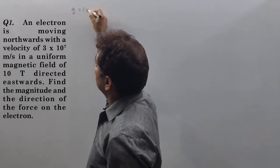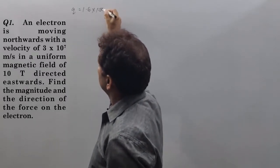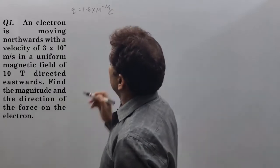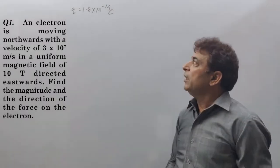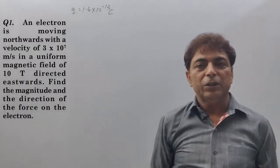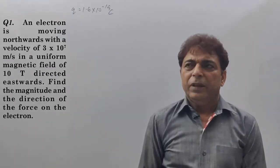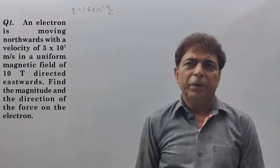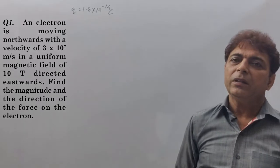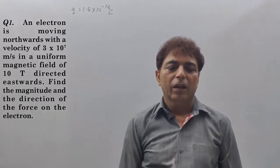Electron charge: 1.6 × 10⁻¹⁹ coulomb. Whether given in the exam paper or not, as science students, we must remember this value.